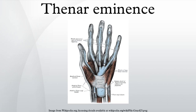The thenar eminence refers to the group of muscles on the palm of the human hand at the base of the thumb. The skin overlying this region is the area stimulated when trying to elicit a palmar mental reflex.